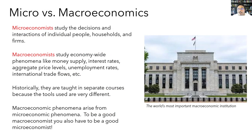Now let's talk about micro versus macroeconomics. The title of this course is Principles of Microeconomics, which suggests a distinction between micro and macro. The difference lies in the types of questions being studied. Microeconomists study the decisions and interactions of individual people, households, and firms — with a key emphasis on the individual. For example, a microeconomist might study how households choose to allocate their budget, how people decide how much education to obtain, or what happens when two firms choose to merge. Macroeconomists, on the other hand, tend to study economy-wide phenomena like the money supply, interest rates, aggregate price levels, unemployment rates, and international trade flows.